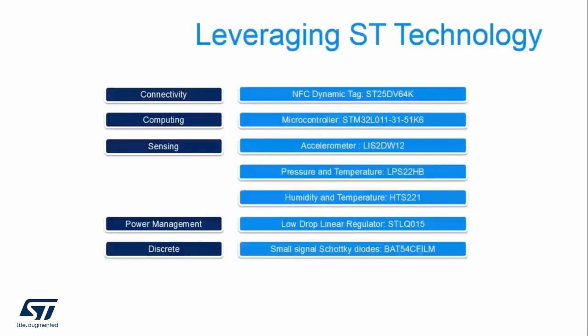In sensing, our MEMS sensor portfolio covers gyroscopes, magnetometers, accelerometers, barometers, humidity, and temperature sensors. In this design, we are using the LIS2DW12 accelerometer, the LPS22HB for pressure and temperature, and the HTS221 for humidity and temperature. We are also a leader in power management, particularly low-dropout linear regulators, and ST also delivers a rich portfolio of discrete devices such as diodes and rectifiers. In general, all the silicon on the ST NFC sensor tag evaluation board uses all ST technology.